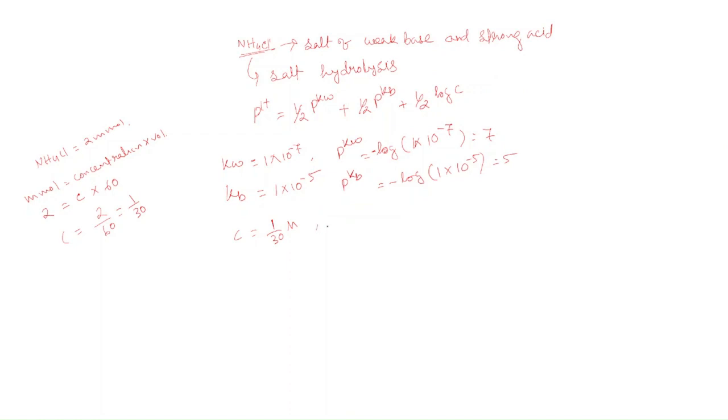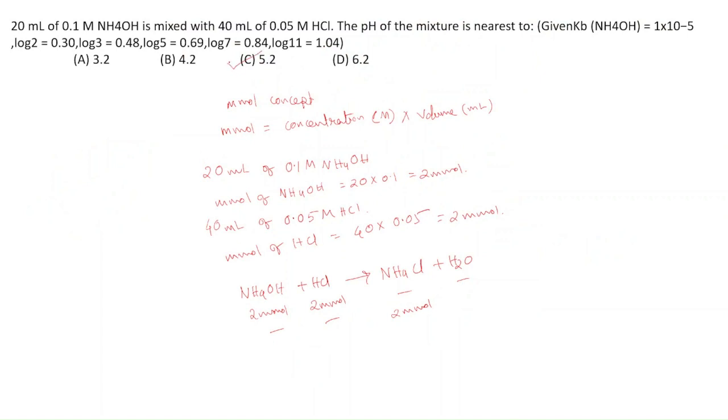Log C of 1 by 30 equals minus log of 30, which is minus log of 3 times 10. This equals minus log 3 minus log 10. Minus log 3 is given as 0.48, and log 10 is always 1, so this is minus 1.48. Therefore, pH equals half of 7 plus half of 5 minus half of 1.48, which gives 5.2. So pH is 5.2, and the correct answer is C.